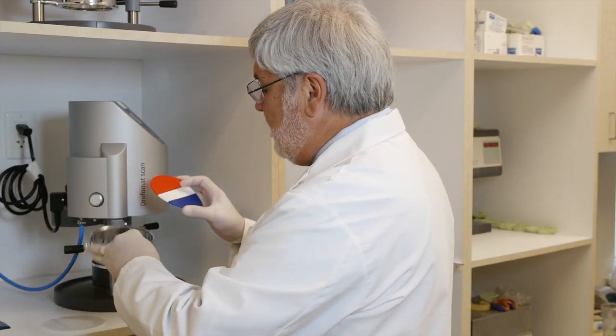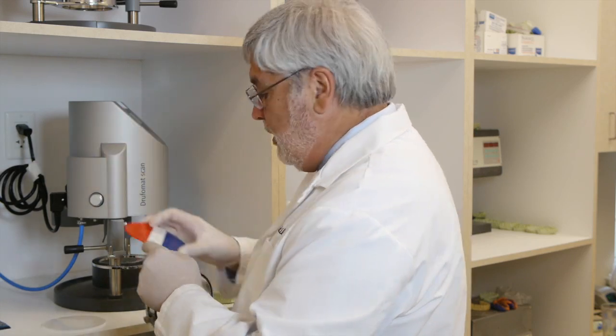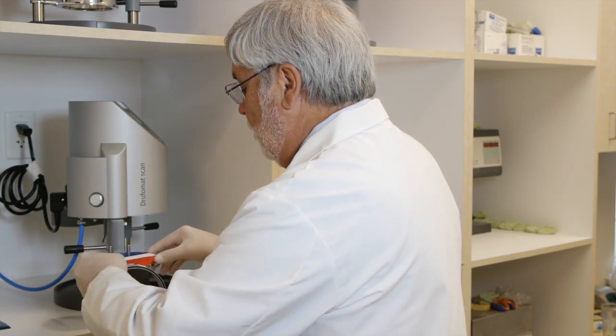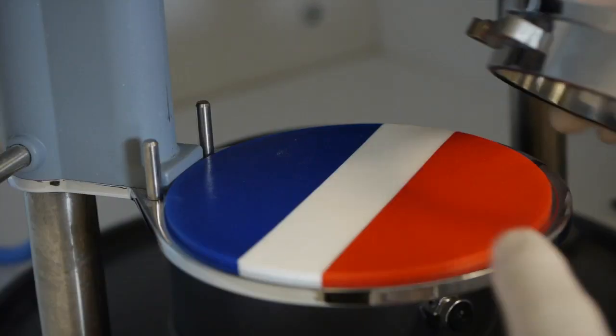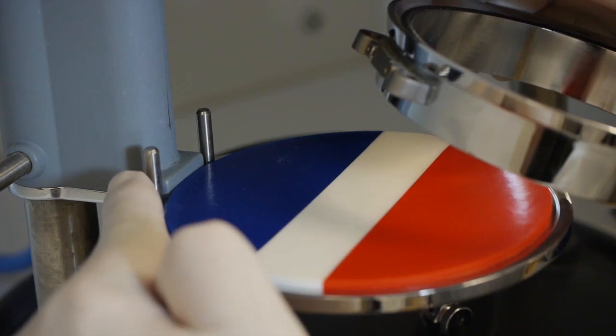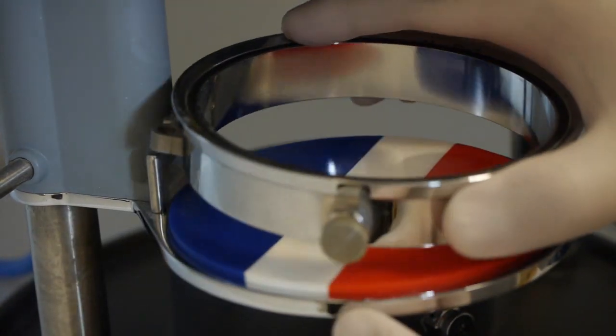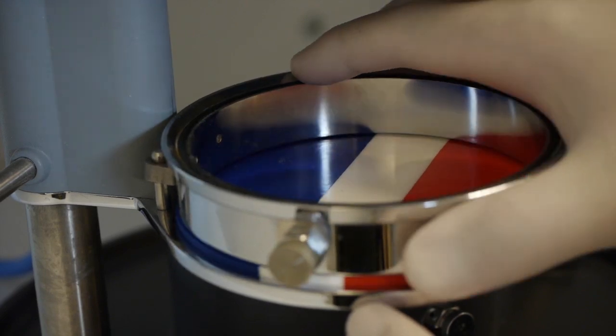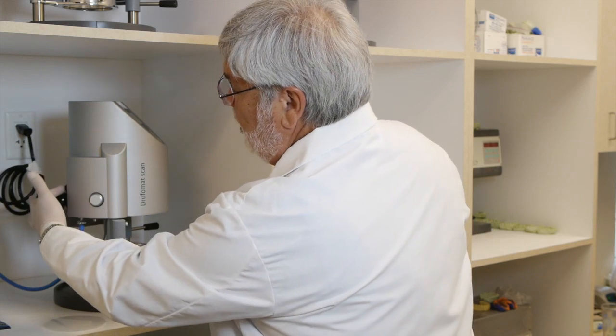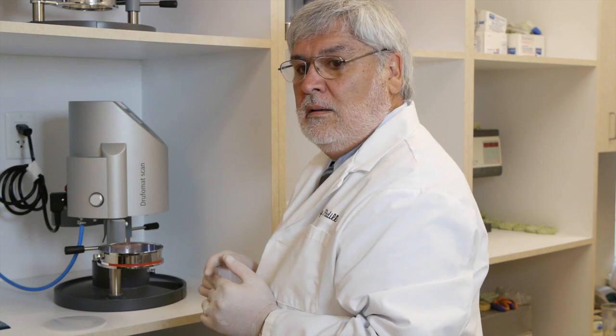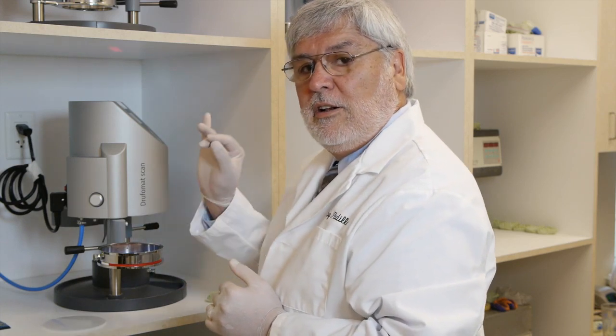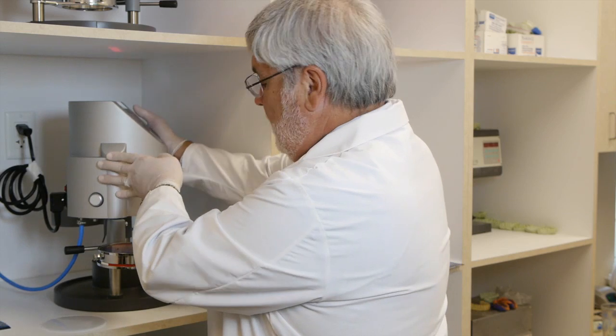First thing we do is place the mouth guard material in the ring. These two holes you see right here must fit in these two posts. Now we have to turn the machine on, so we'll turn the machine on from the back. You'll hear a little beep - that means the machine is on.